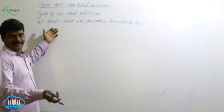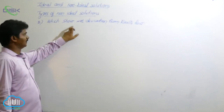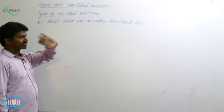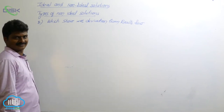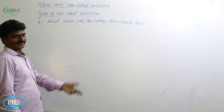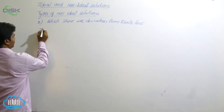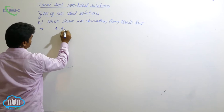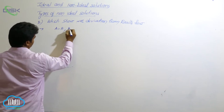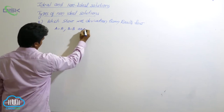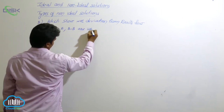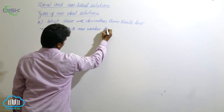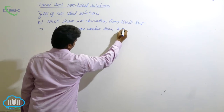Next, let's see the second type of non-ideal equations, which show negative deviation. The key point about this kind of equation is that AA interactions and BB interactions are weaker than AB interactions.